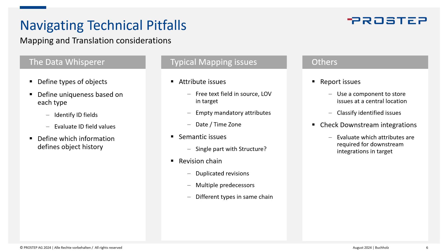Also very common are empty mandatory attributes. You may have an attribute in the source system that is not mandatory, but in the new system it is mandatory, so you must provide some value. In mapping, watch out for this — if there is no value or no meaningful value to map, come up with a default value, something like 'migrated', so you know there was no former value in the system.